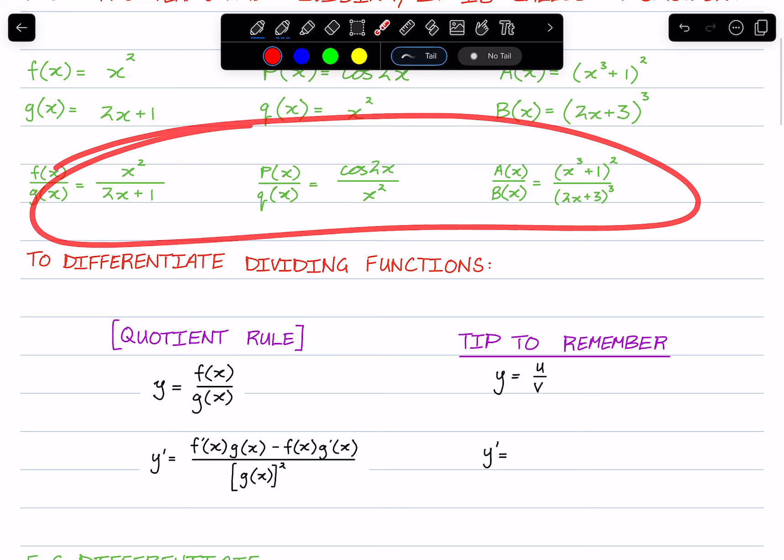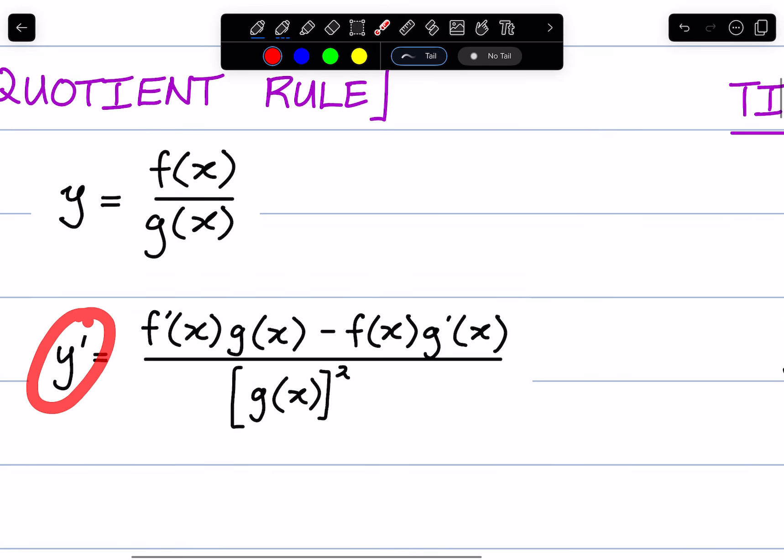All of these are of the form y equals f(x) over g(x), and so its derivative y' is equal to f'(x) times g(x) minus f(x) times g'(x), all over the square of g(x).